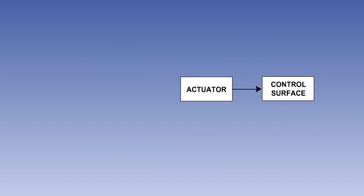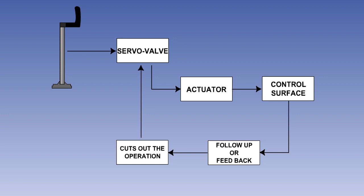A simple power-operated flying control system consists of four essential parts: a hydraulic actuator to move the control surface, a servo or control valve to control the actuator, a follow-up or feedback system to ensure that the actuator movement stops when the required displacement is achieved, and for a fully powered system, an artificial feel unit, as the pilot will not receive any aerodynamic feedback.